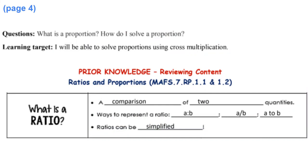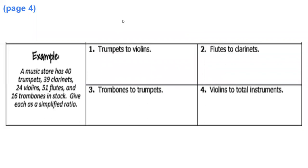So just to show what that means, we've got a big thing on the side: a music store has 40 trumpets, 39 clarinets, 24 violins, 51 flutes, and 16 trombones in stock. We want to give a simplified ratio to represent each of these things here using either colons or fractions or the wordage however you'd like to do it.